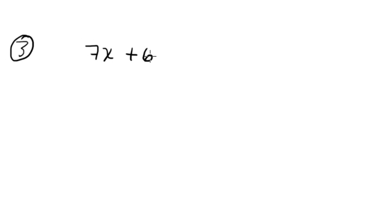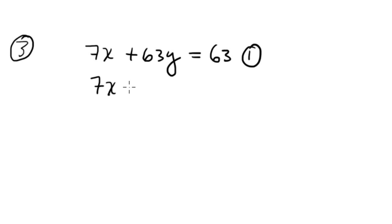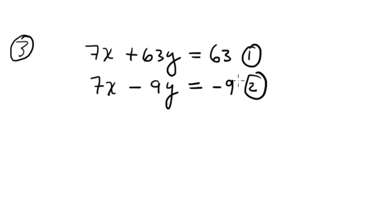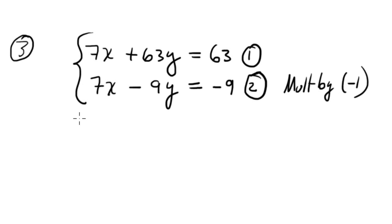Question 3: the system is 7x plus 63y equals 63, equation 1, and 7x minus 9y equals negative 9, equation 2. My proposal is multiplying the second equation by negative 1, giving negative 7x plus 9y equals positive 9 — this is equation 2 transformed.